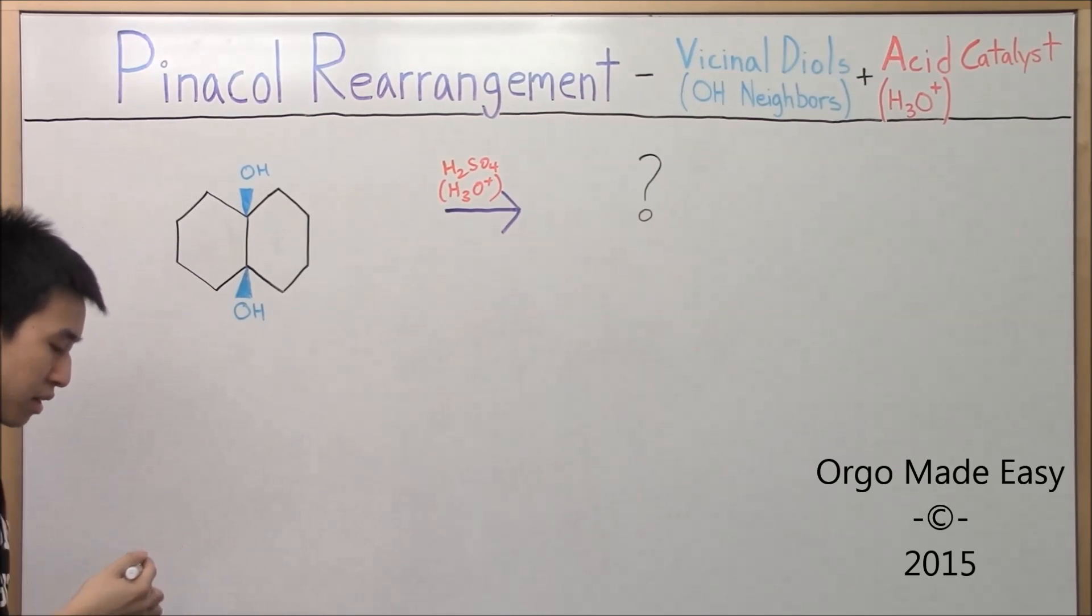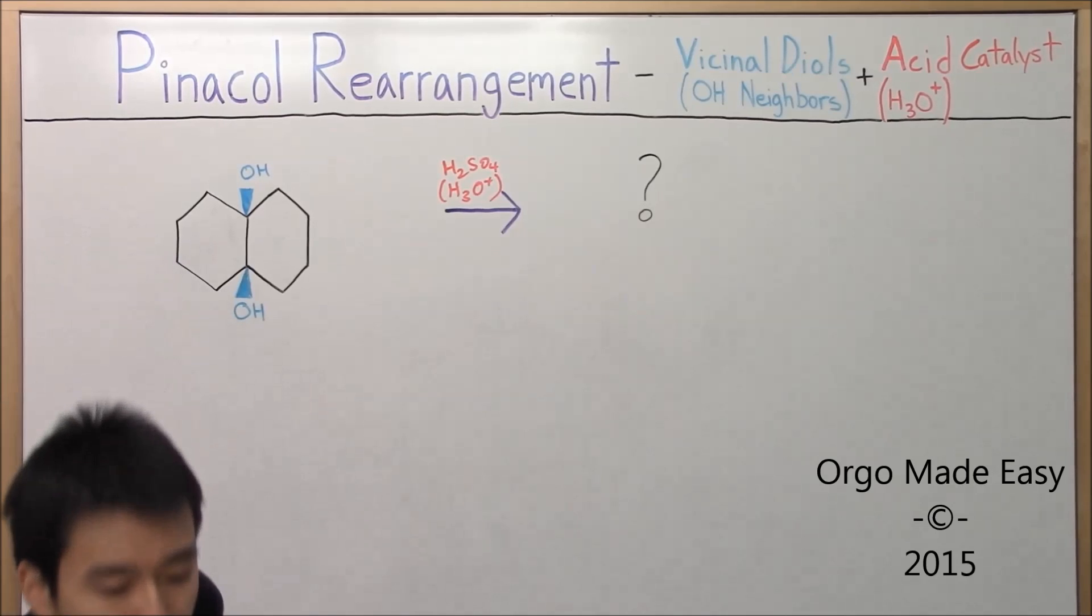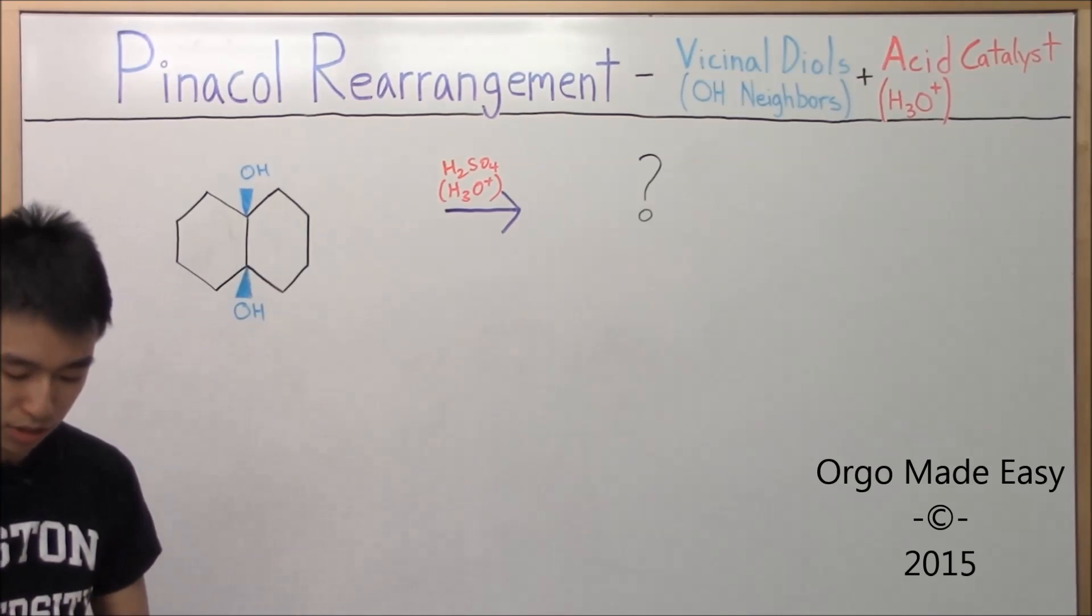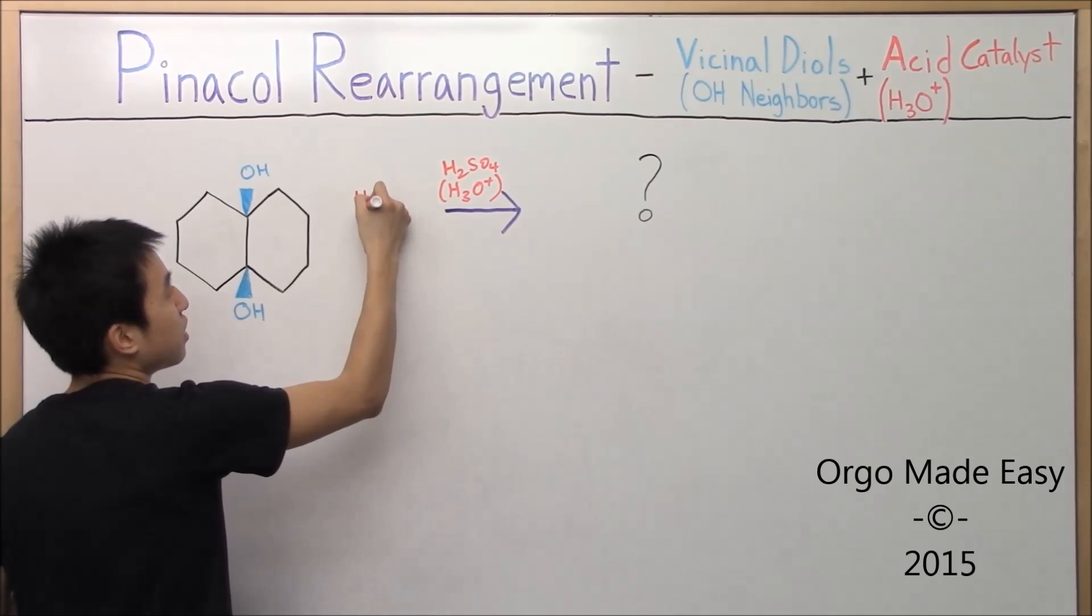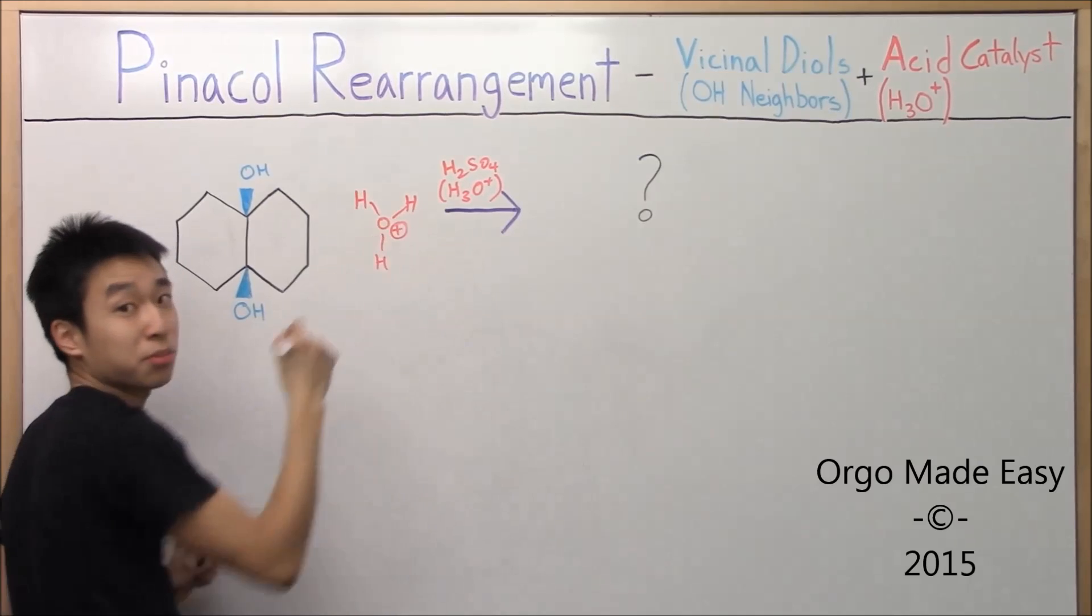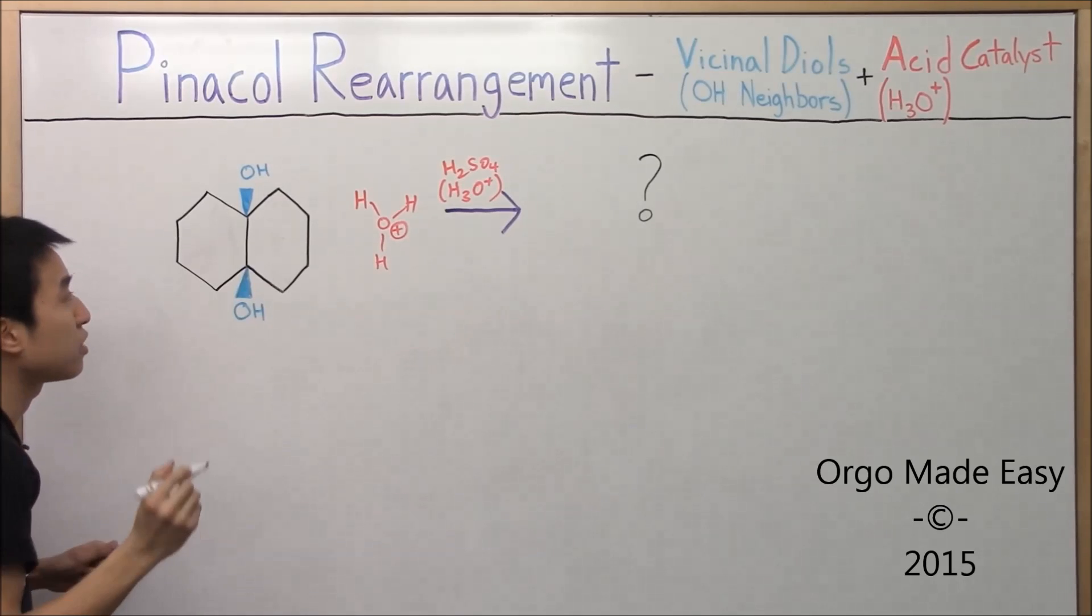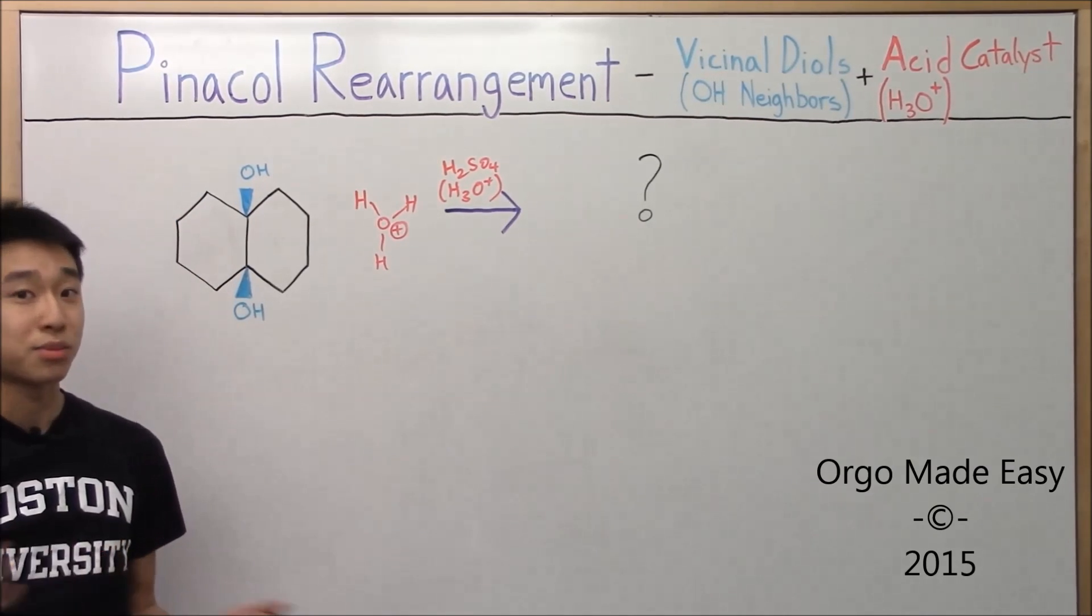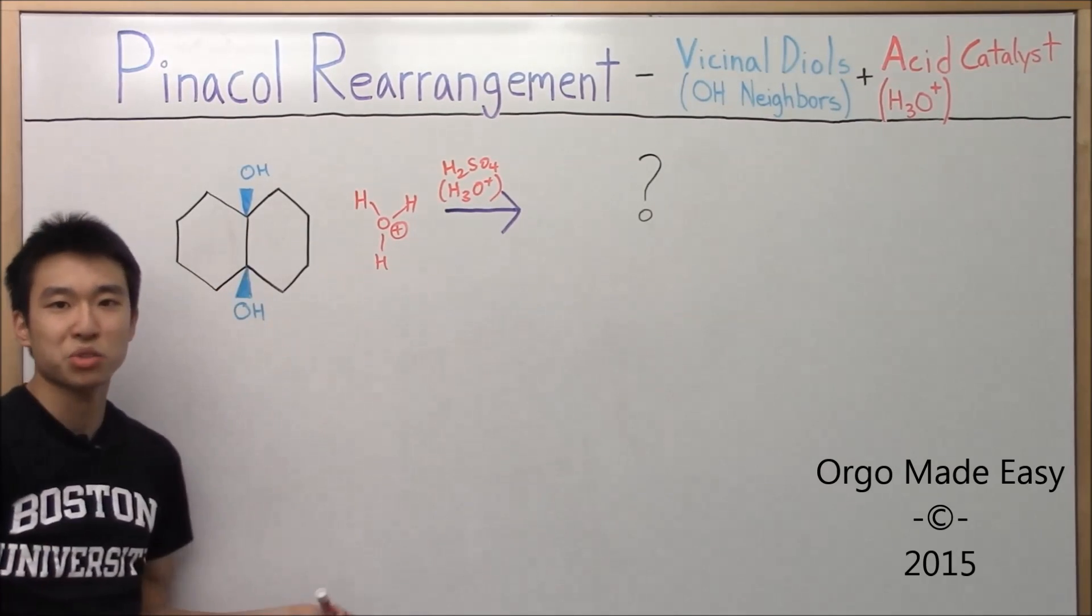Okay, so for this super tough one, how do we do it? What's going to be the mechanism? Hopefully you said draw your H3O+, just like in the last two videos. What's going to happen? We need to protonate one of the OHs. Which one? Doesn't matter, because they're equally as substituted and the molecule is pretty darn symmetrical.